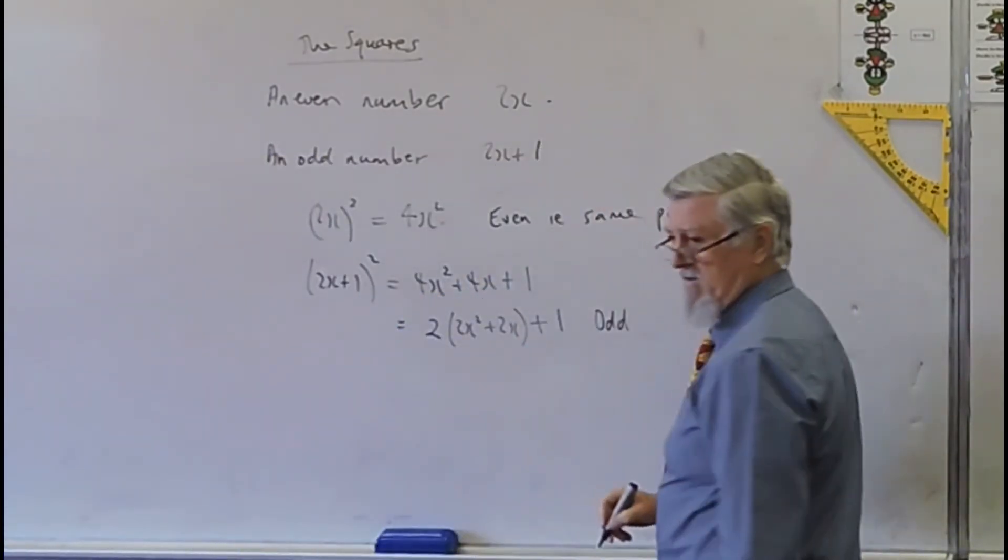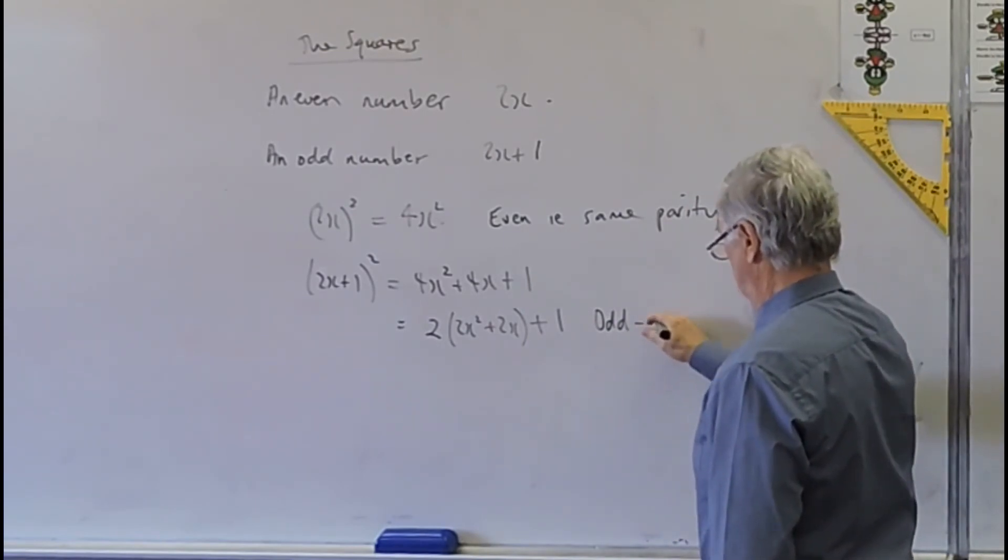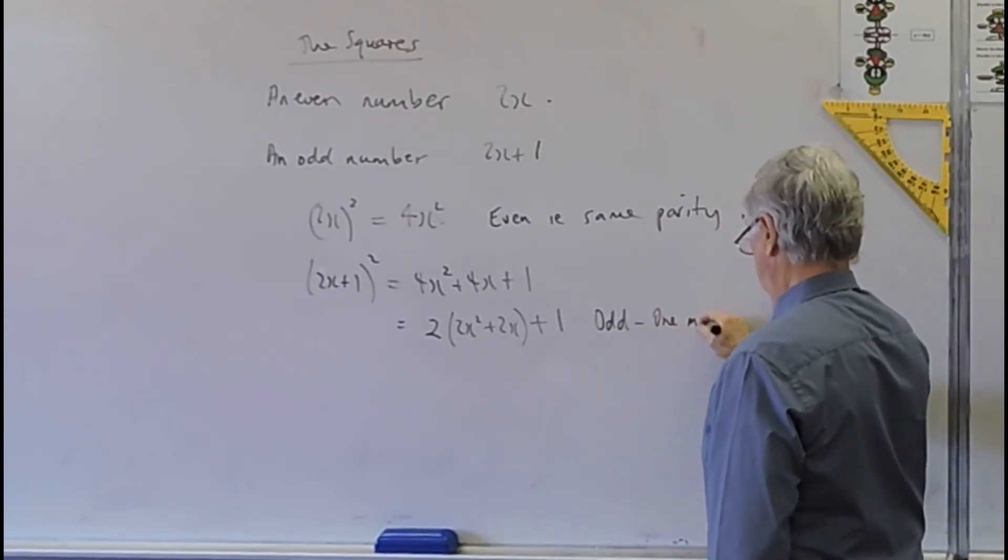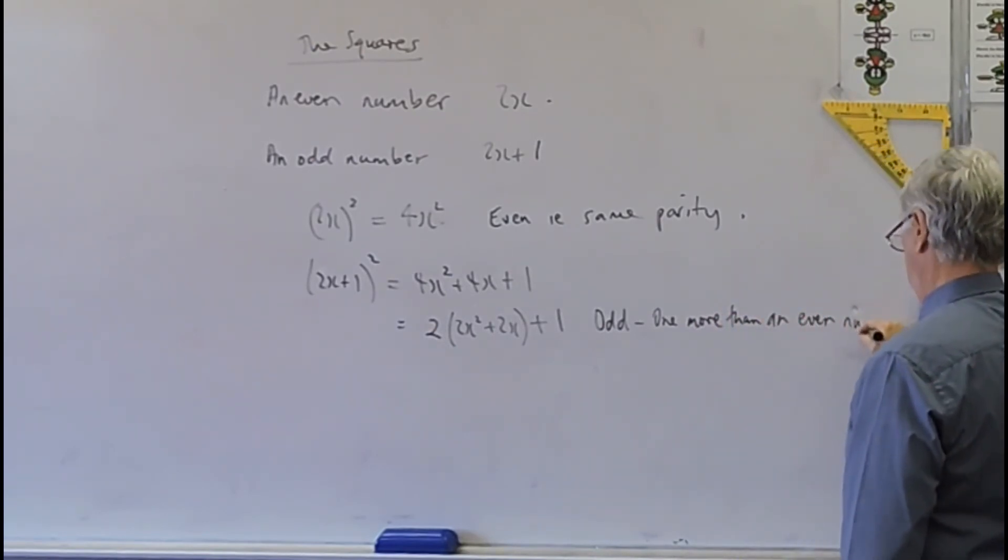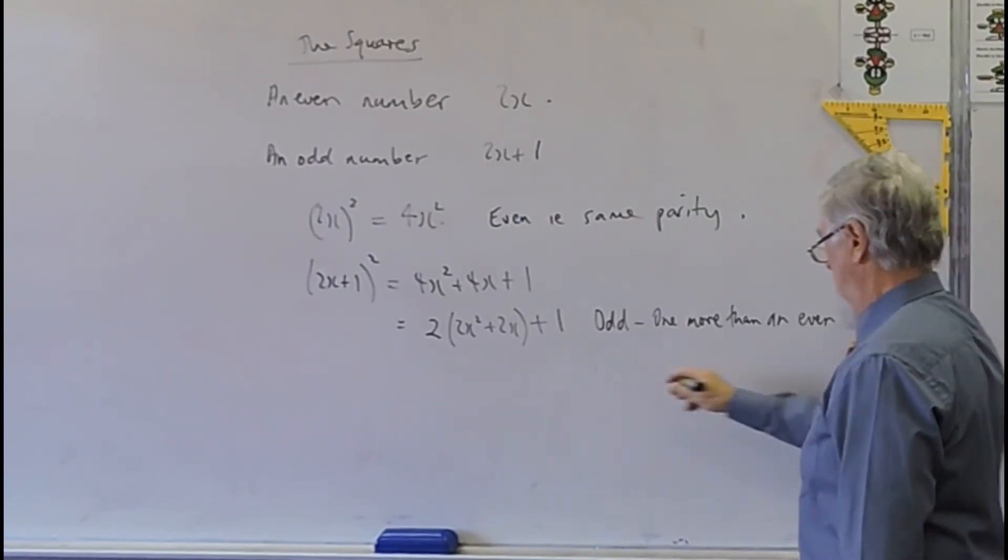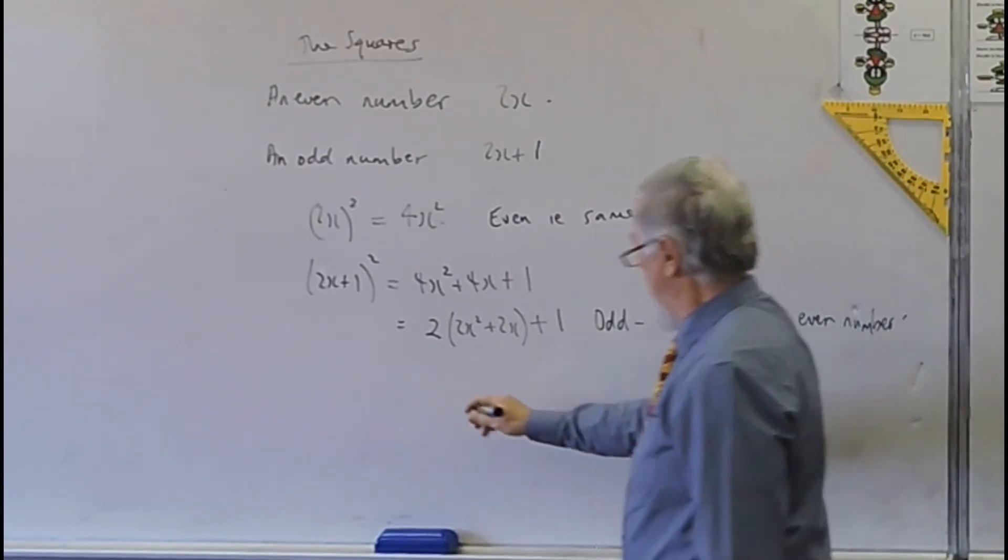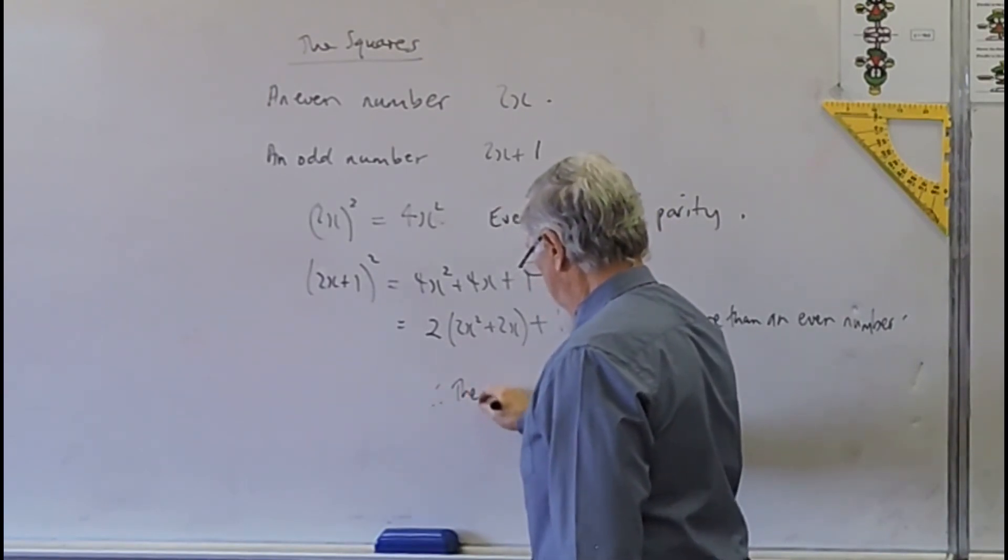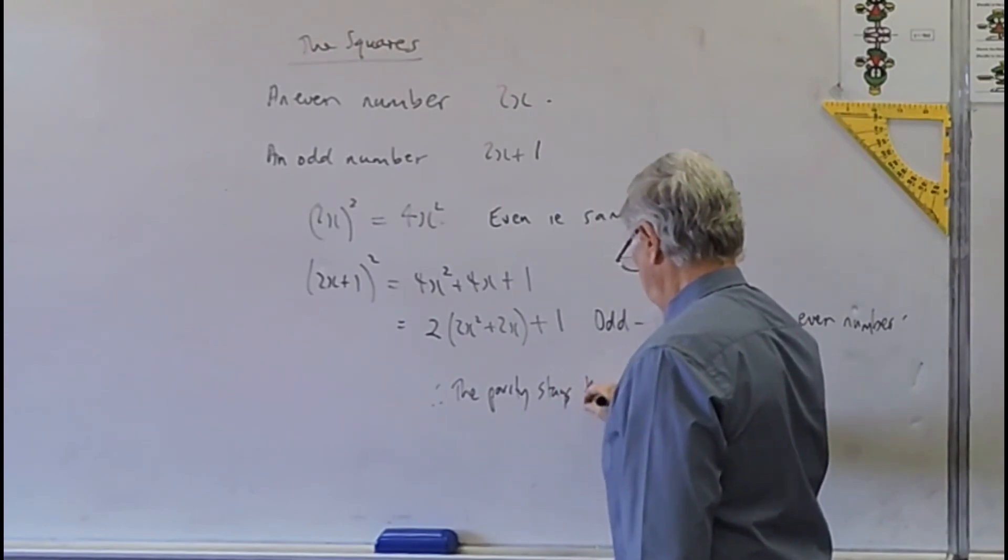Now why is it odd? Because it's one more than an even number. Or should I say even number? It'd be a bit fussy. I.e., so would you say therefore the parity stays the same? Yes.